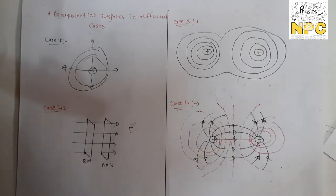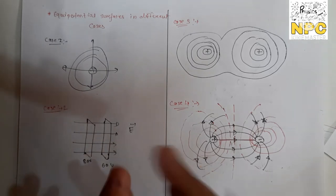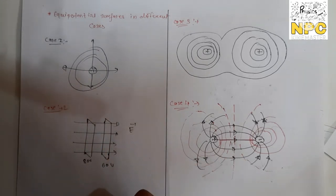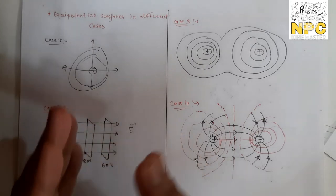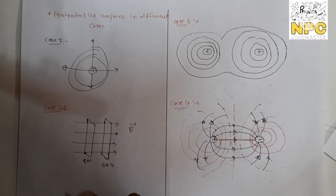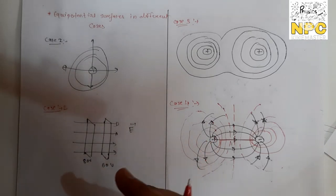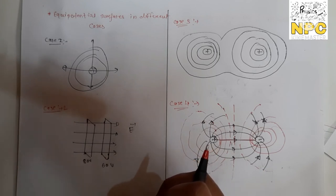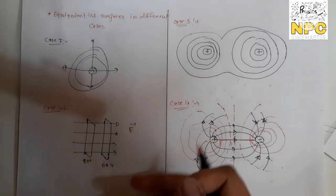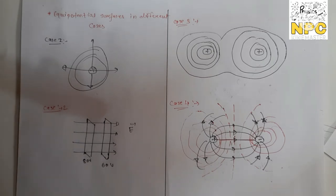So these are the equipotential surface configurations for different charge configurations. In today's lecture we learned: an equipotential surface is the surface on which the potential at every point is equal; potential difference is zero; work done is zero; two equipotential surfaces do not intersect each other. In the next video we will study the relation between electric field and potential. Stay tuned with NPC, keep watching and keep learning. Thank you so much.